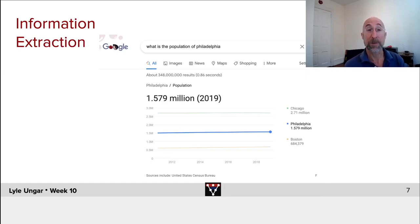Contrast that with information extraction. Here we take a query in, and a large number of documents, but instead of returning a document, we return a fact. What is the population of Philadelphia? It is roughly 1.579 million, according to Google. So we've extracted information from a large document.